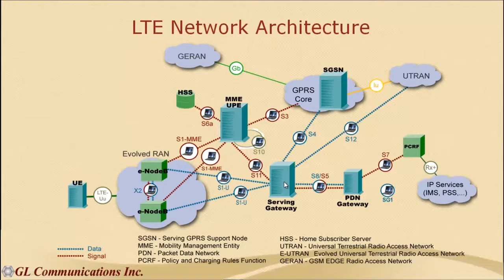HSS is a master database where all subscription information is stored. It stores user identification like MSISDN and IMEI. It stores security-related information used for authentication and authorization. It also calculates security triplets containing ciphering key and integrity key, which are used in MME and E-NodeB. The HSS is kept updated by other network elements with the UE's present location. This concludes the brief introduction to LTE network.